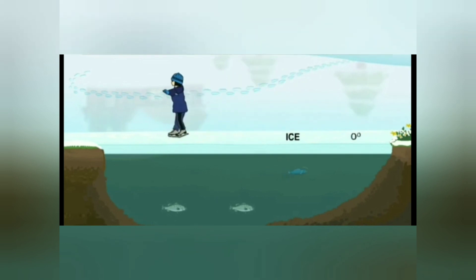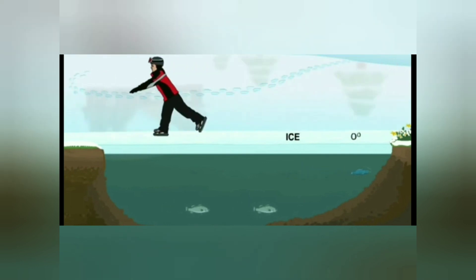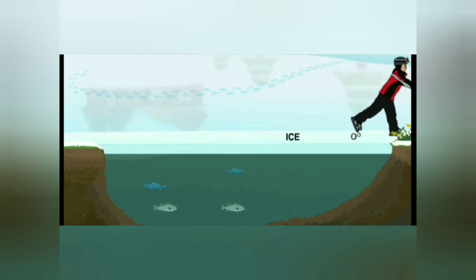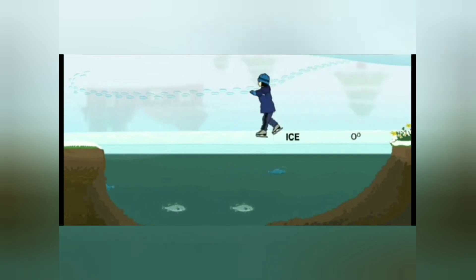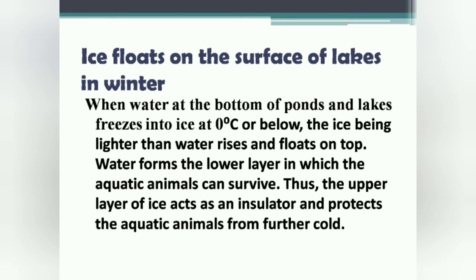In countries or places where temperature falls to 0 degrees Celsius or below during winters, the whole water in rivers or lakes does not freeze up to the bottom. Instead, a layer of ice is formed at the surface, which keeps on floating. This happens due to the anomalous behavior of water — when temperature decreases below 4 degrees Celsius, water starts expanding and its density starts decreasing, and at 0 degrees Celsius when ice is formed it floats on water because of its lower density.